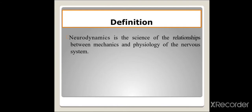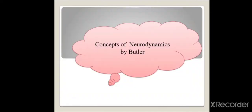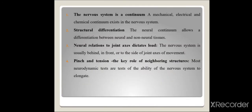Neurodynamics is defined as the science of the relationship between mechanics and physiology of the nervous system. Butler gave a total of seven concepts. The first concept states that the nervous system is a continuum — it is a mixture of mechanical, electrical, and chemical continuum existing within the nervous system. The second concept is structural differentiation: neural tissue can be differentiated from non-neural tissue in the neural continuum.